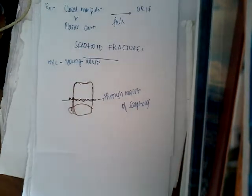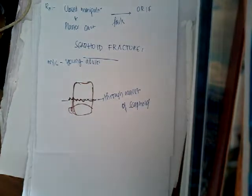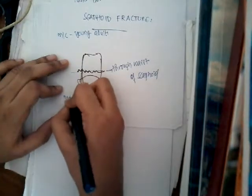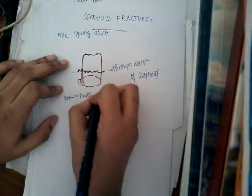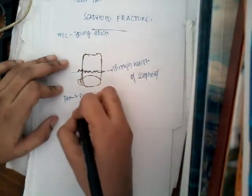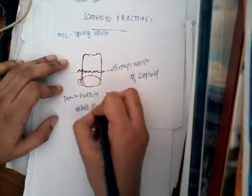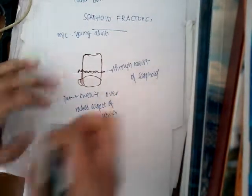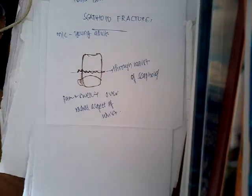What are the clinical features of scaphoid fracture? The main clinical features are pain and swelling over the radial aspect of the wrist. On examination of the radial aspect of the wrist, you can also elicit tenderness.